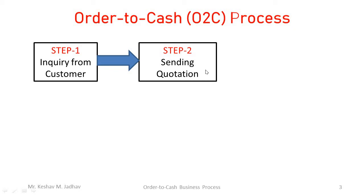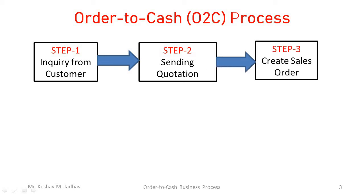After sending the quotation to the customer, if the customer is okay with our quotation, they will send a purchase order. Based on the purchase order received from the customer, the sales department will create a sales order. The sales order includes everything: product detail, quantity, price, payment terms, delivery date, shipping conditions, etc.